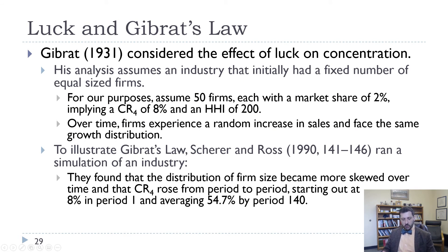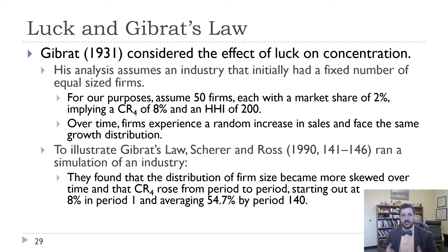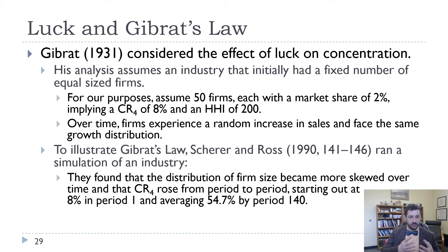One question is: what causes some of these industries to become so concentrated? One early theory was that it was just randomness. Gibrat in 1931 said: what if some firms are just luckier than other firms? He showed that could actually increase concentration as the luckier firms grew and the unluckier firms shrank. Scherer and Ross ran a simulation of an industry and showed that CR4 rose from 8% market share for the top four firms up to 54% market share by period 140 — and that was just based on luck.